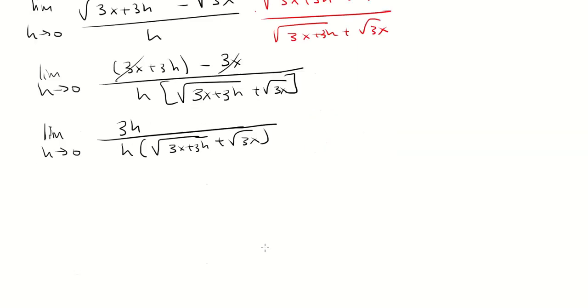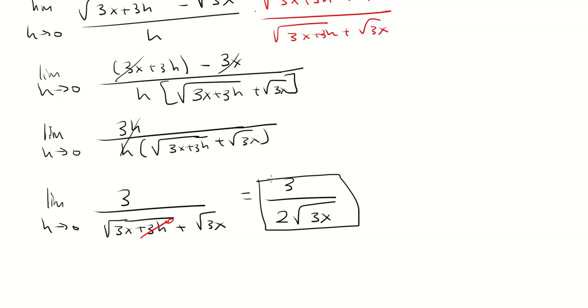The h is going to cancel, so I have 3 over the square root of 3x plus 3h plus the square root of 3x. And if I let h approach 0, this is going to go to 0, and I'm left with 3 over 2 times the square root of 3x. And this is my derivative.